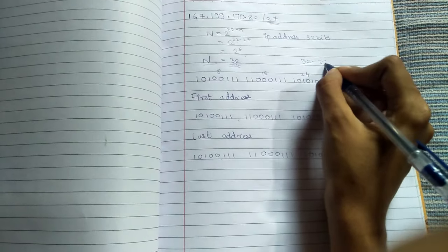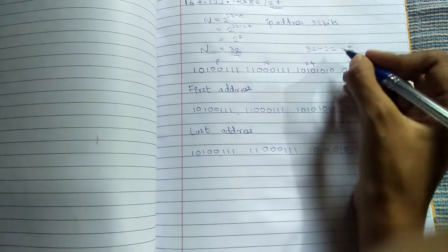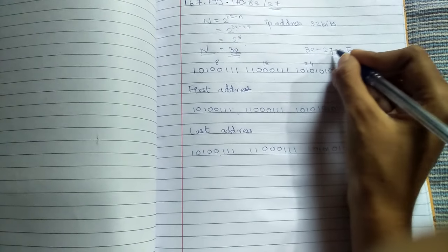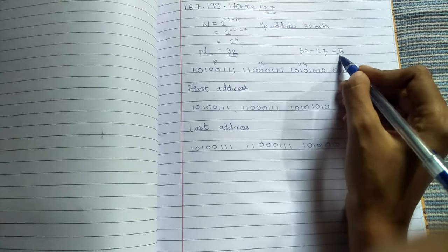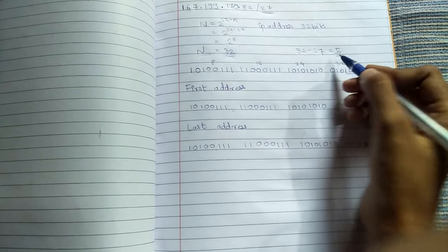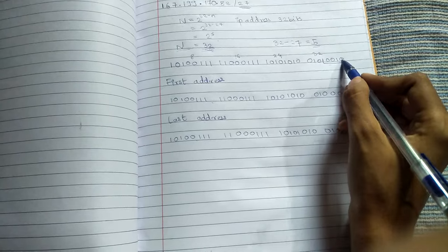32 minus 27 equals 5. Now you have got this 5, so now we will start counting from the end.